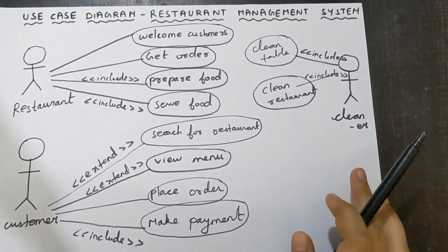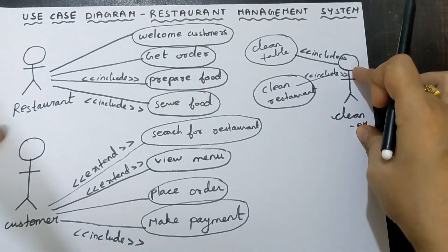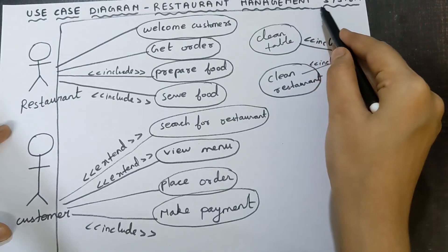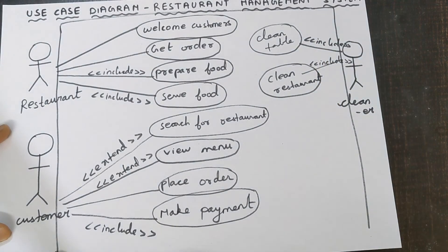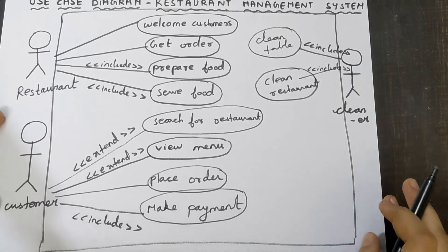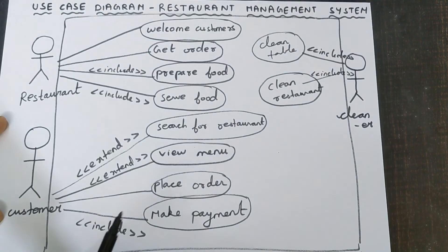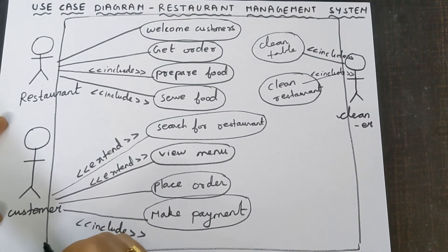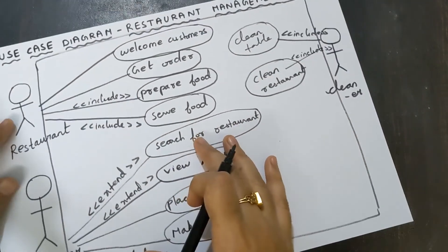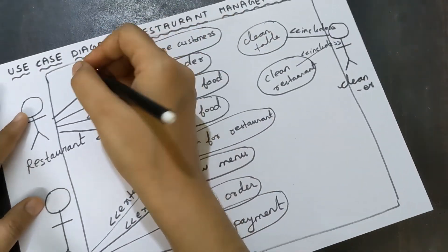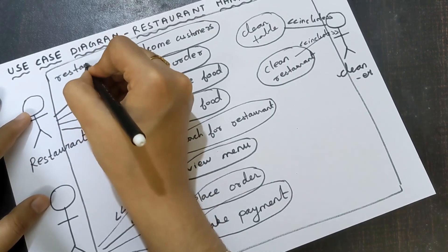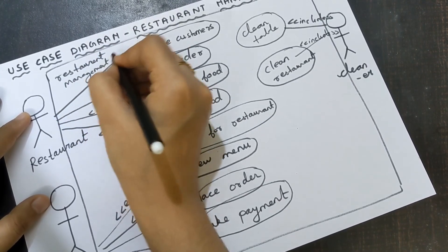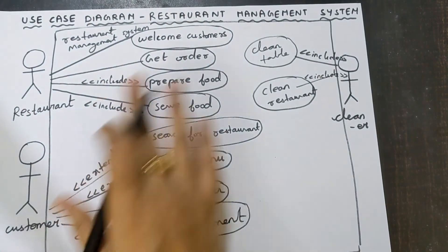There is one last step — that is your system boundary. You have to draw a big box, leaving the actors outside. Don't include the actors inside the big box. This big box is known as system boundary, and it is important. Actors alone should be outside the box; the rest of the diagram should be inside. You need to give a name for this system boundary — the name is restaurant management system.